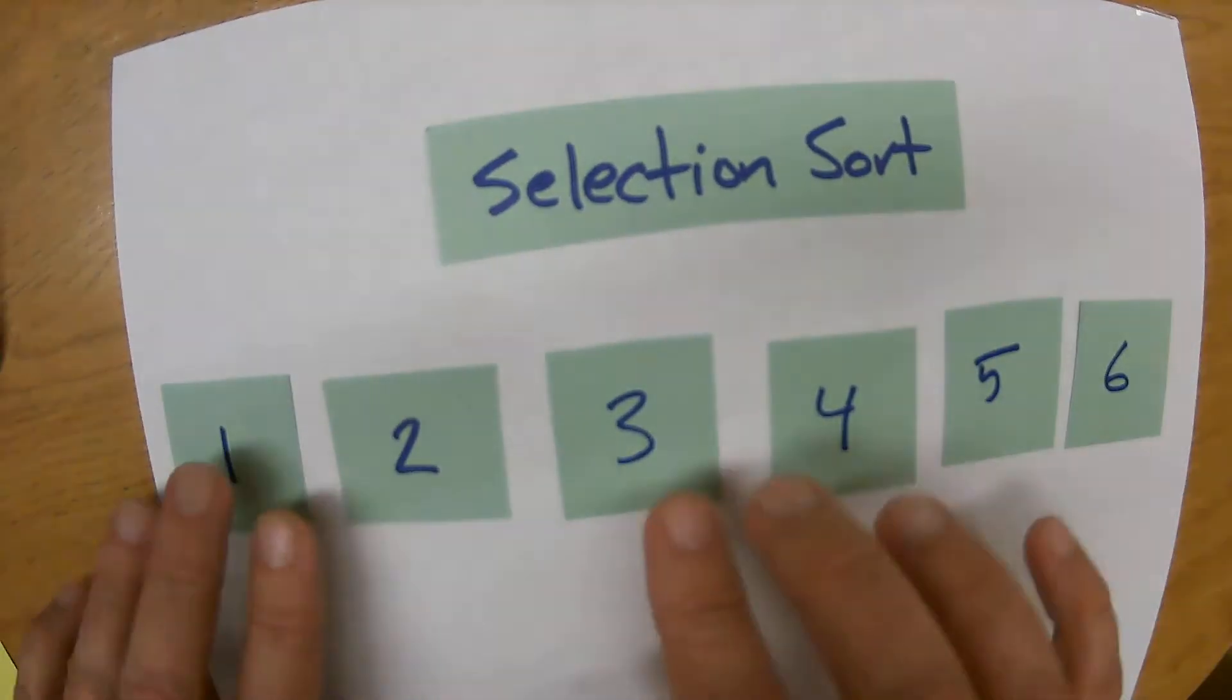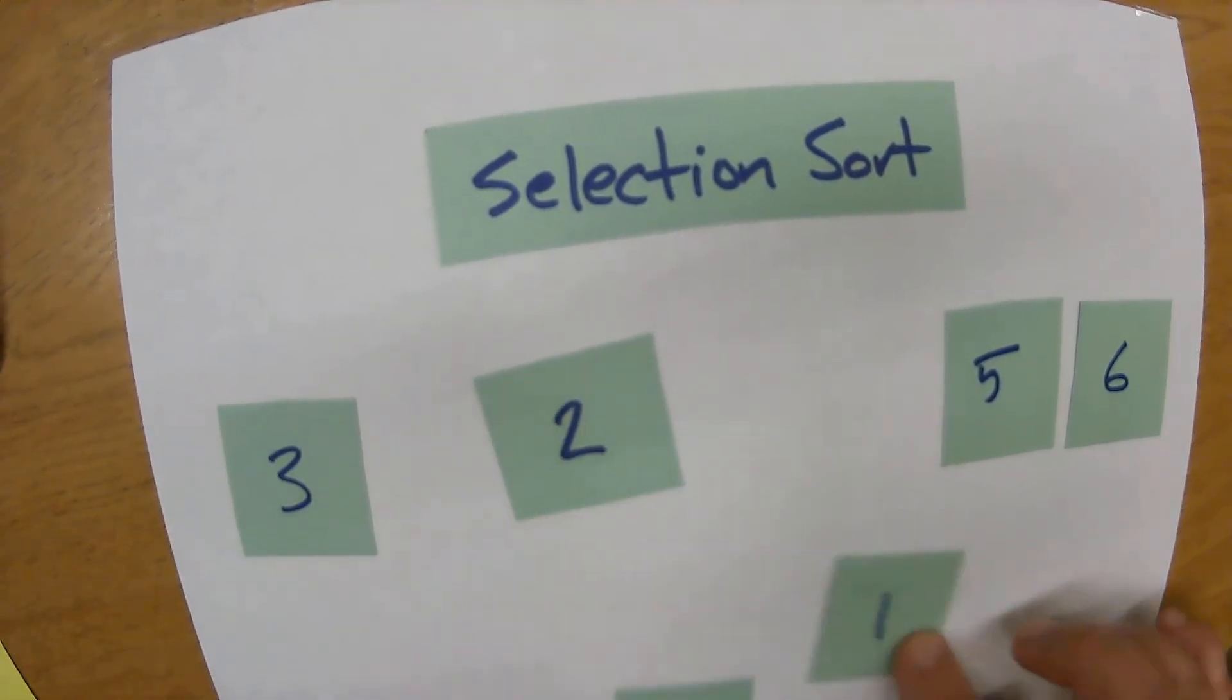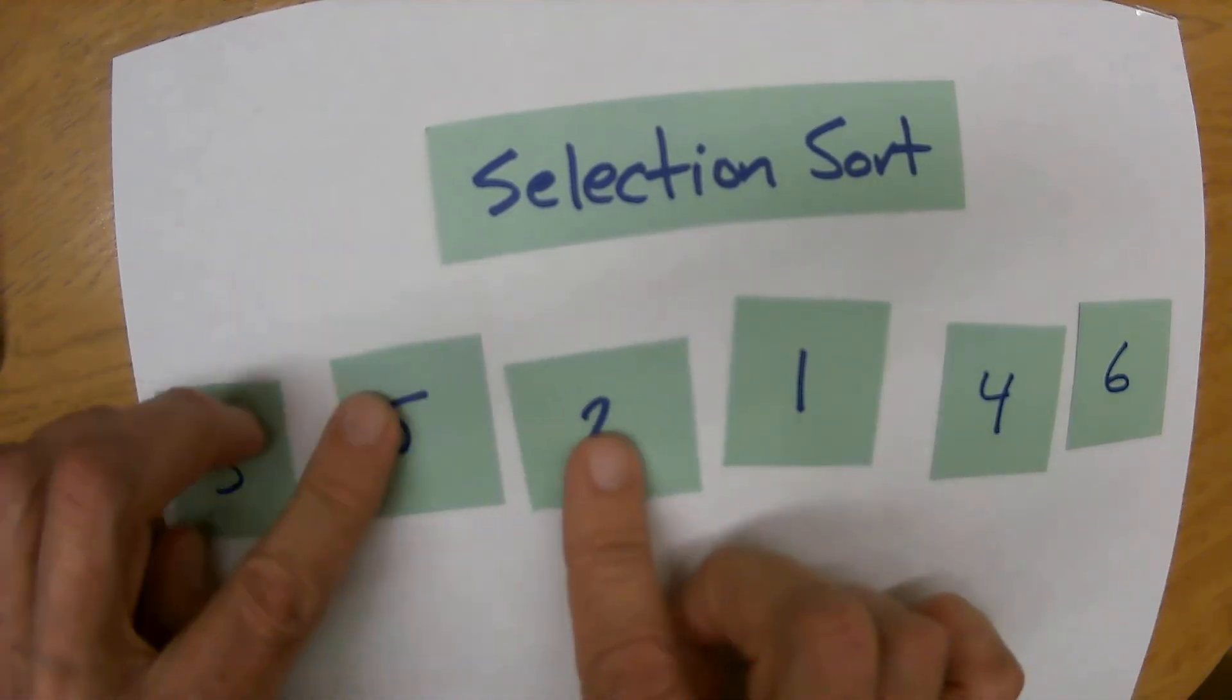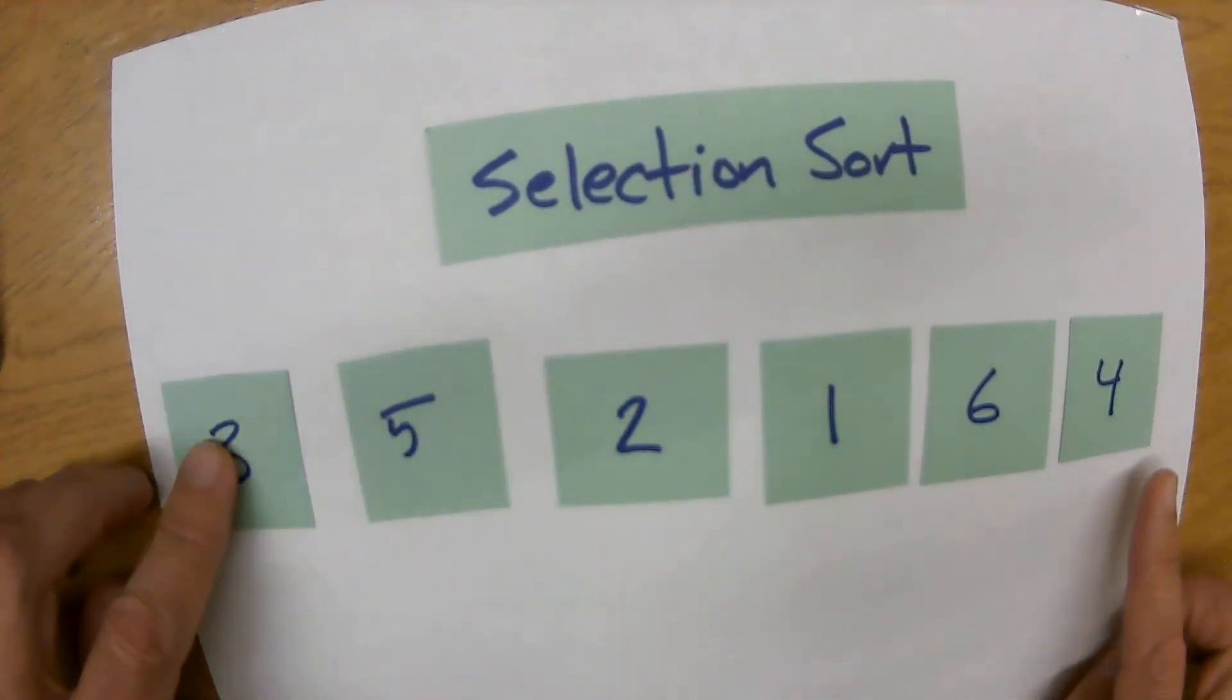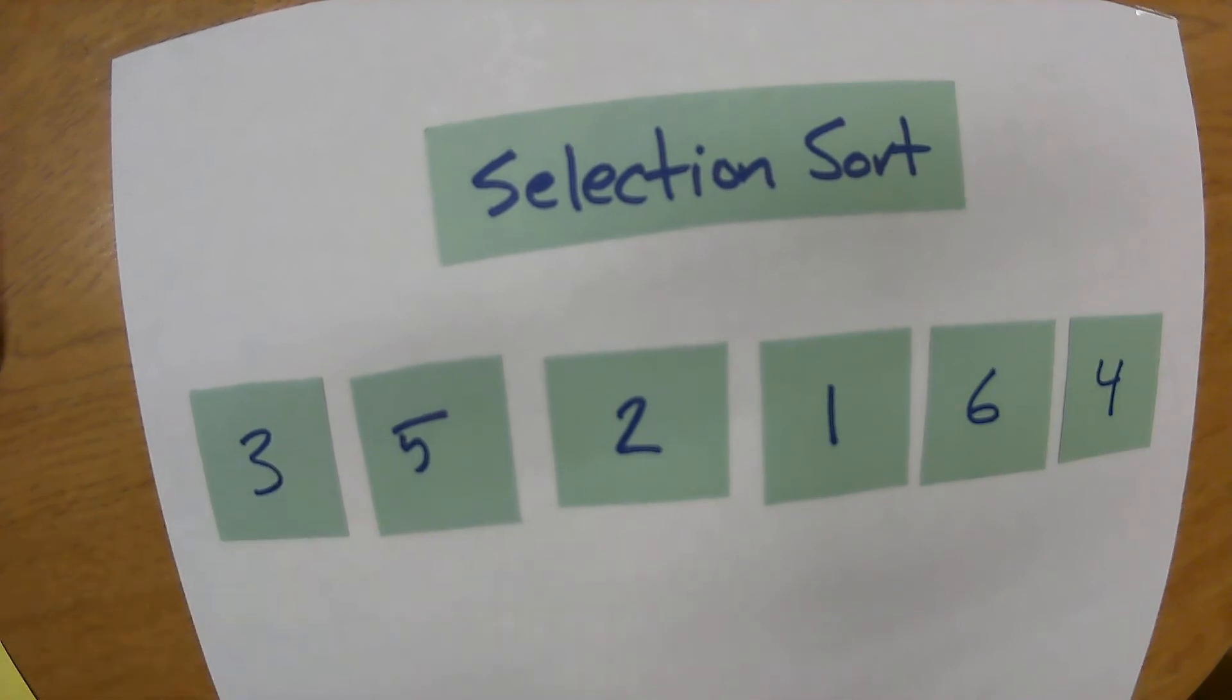Next is something called a selection sort. The way a selection sort works is we're trying to just get one element set to the right value at a time. What we need to know how to do is find the minimum value in the list. So what I'm going to do is start here and this is the value I want to fix, and I'm going to scan the entire list looking for the minimum value.